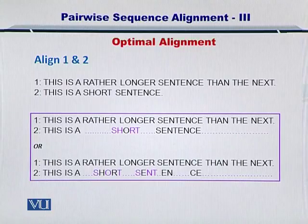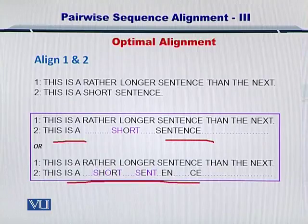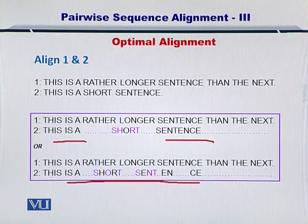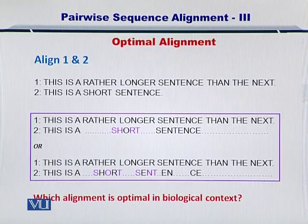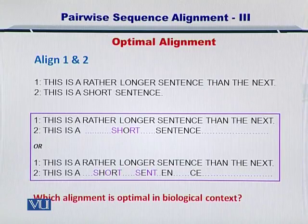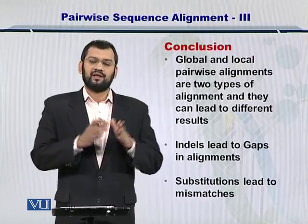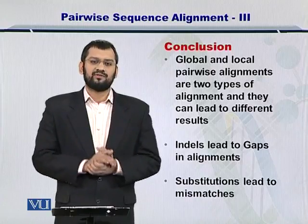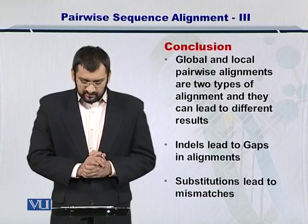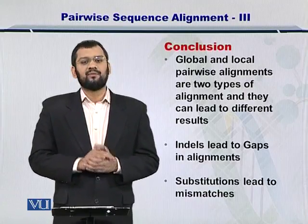It actually depends. In my opinion, the first alignment makes more sense, while the second alignment does not make a lot of sense if you are looking at the English language. But for biological sequences, the second may just be more meaningful. We will be studying this in later modules in detail. Please do not forget that the biological context is very important to decide which alignment is better. In conclusion, global and local pairwise alignments help you to compare either entire sequences or portions within sequences in an exact fashion. Indels lead to gaps in the alignments, while substitutions may lead to mismatches.